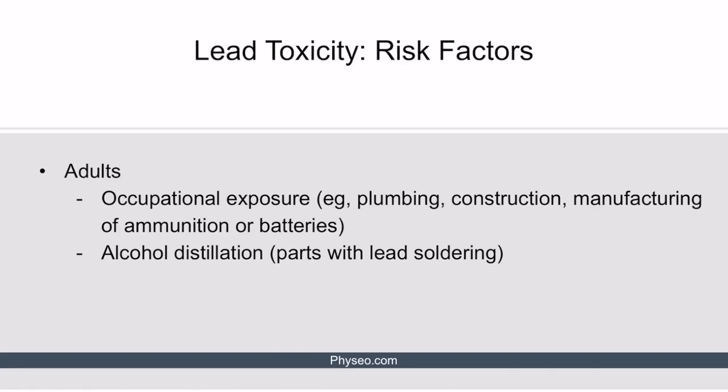The risk factors for lead toxicity stem primarily from exposure to lead at home or at work. In adults, occupational exposure is one of the most notable risk factors, seen in people working in plumbing, construction, or manufacturing of ammunition or batteries. If a question stem describes a patient's occupation, it is probably a significant clue into the correct answer. Alcohol distillation using parts with lead soldering is also a testable risk factor for lead toxicity in adults.